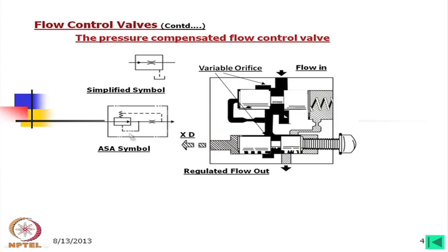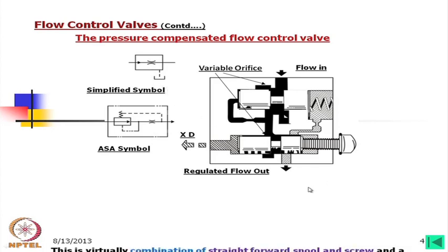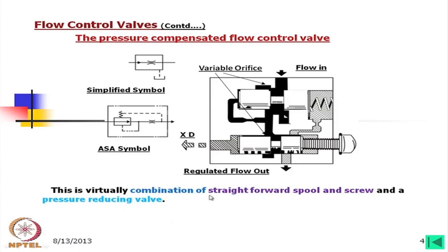Sometimes this external excitation is required to operate this valve or to divert the flow. Looking into the symbols, there is the ASME symbol and a more simplified symbol. It may not be easy to remember this symbol, but we should be able to understand that this is a pressure-compensated flow control valve. This is virtually a combination of a straightforward spool and screw and a pressure reducing valve.